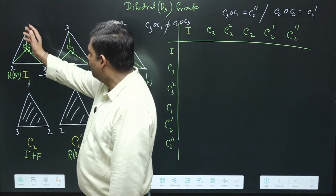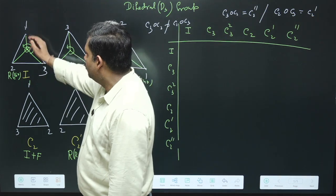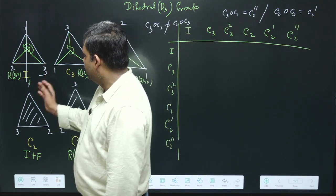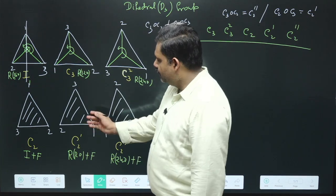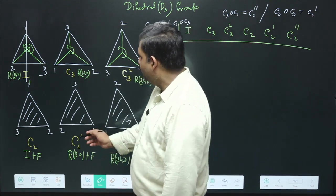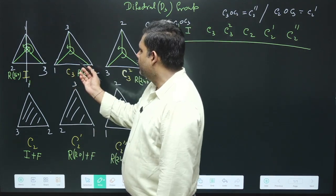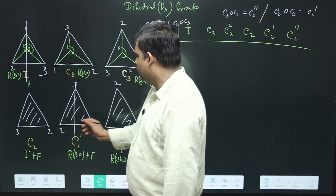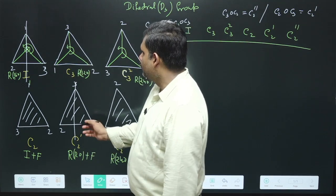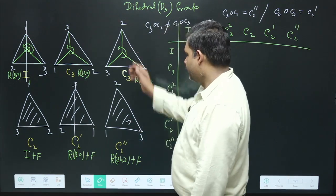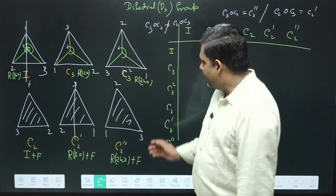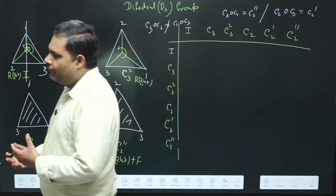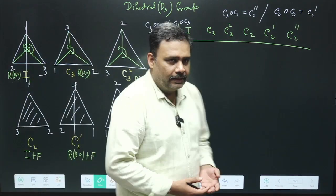Flipping about this axis sends corner 3 to one position and corner 2 to another, giving the element C2. The next element, C2', involves first rotating 120 degrees and then flipping about the axis — giving corners 1 and 2 in new positions. The final flip element involves rotating 240 degrees first and then flipping, giving C2''.